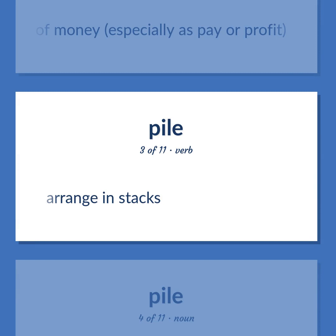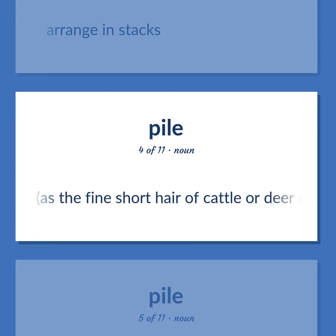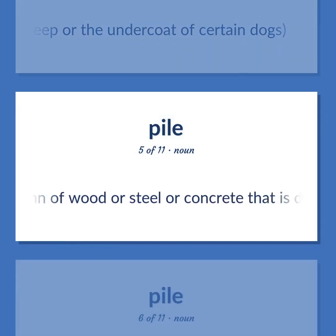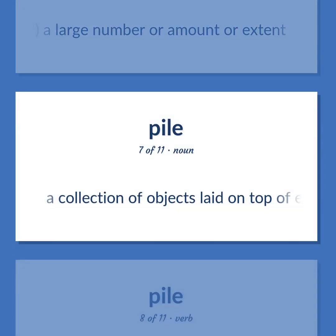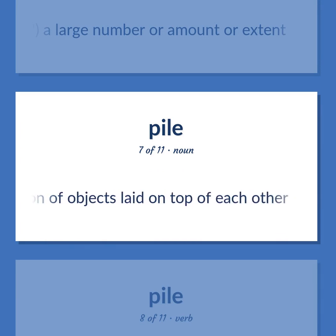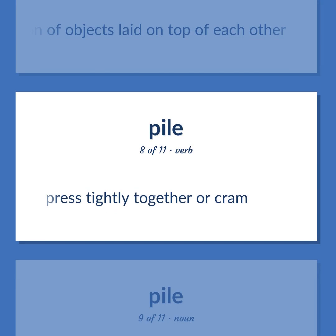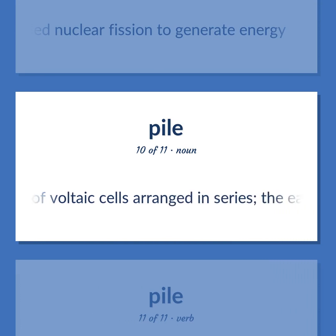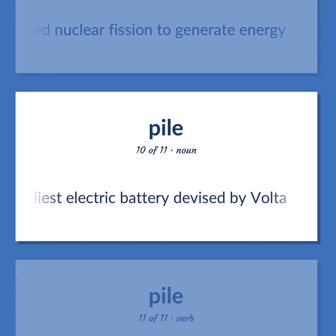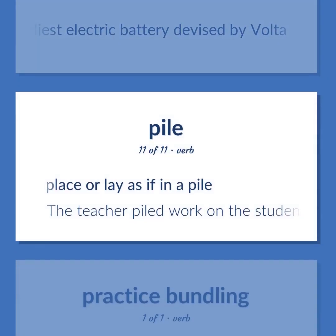Pile: arrange in stacks. Fine soft dense hair, as the fine short hair of cattle or deer, the wool of sheep, or the undercoat of certain dogs. A column of wood or steel or concrete that is driven into the ground to provide support for a structure. Often followed by 'of': a large number or amount or extent. A collection of objects laid on top of each other. Press tightly together or cram. A nuclear reactor that uses controlled nuclear fission to generate energy. Battery consisting of voltaic cells arranged in series — the earliest electric battery devised by Volta.